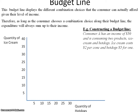The first question: how much ice cream can I get if I invest all of my income — $50 — in ice cream? The price of ice cream is $2, so $50 divided by $2 gives us 25. We are therefore able to get 25 units of ice cream if we invest all of our income in this commodity.